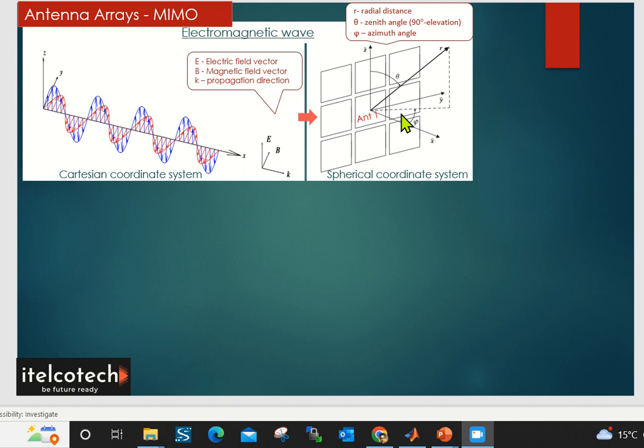The signal transmission or the pattern depends upon two major factors. One is the zenith angle, which is theta. Another is the azimuth angle, which defines how the beam is being formed in horizontal and vertical planes respectively.